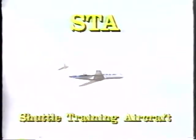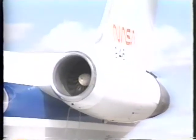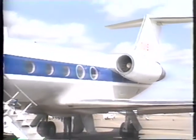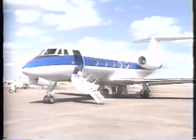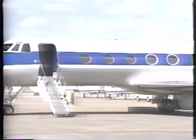NASA responded to this challenge with the Shuttle Training Aircraft, or STA. There are presently three STAs in operation. From the outside, the STA looks like a standard Gulfstream G-2 corporate jet, but it's been extensively modified. With these modifications, the STA can realistically simulate the orbiter's flight characteristics. Making the G-2 feel, handle, and react like the orbiter took some ingenuity.